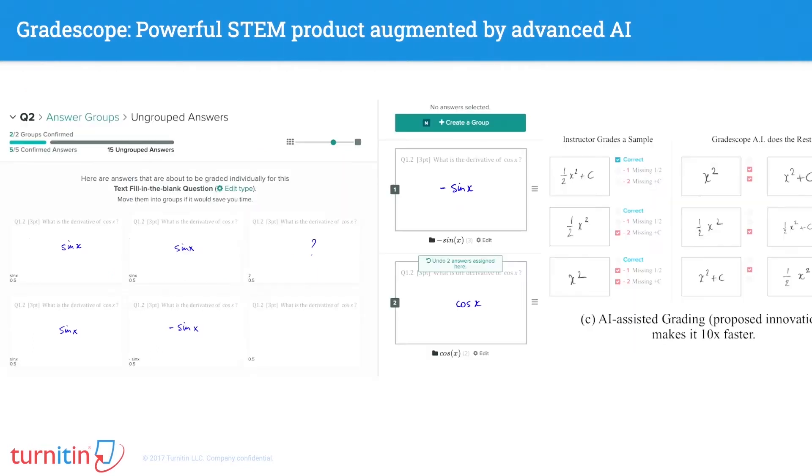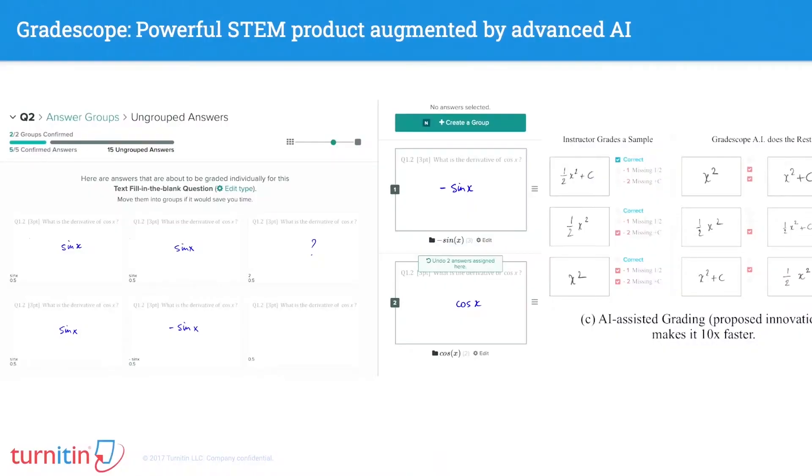There's interesting machine learning to do there. I came to Turnitin through an acquisition of a company I co-founded with Peter Abiel called Gradescope. Gradescope is on the STEM side — science, technology, engineering, math — not the writing side. Our North Star metric is how much time we save instructors without compromising assessment quality. That means helping instructors grade complex student answers — not just multiple choice — in the same way they would on paper, with detailed feedback and accurate grading, but at scale using digitization of paper-based workflows and machine learning on top of that, such as grouping similar answers together or automatically grading after watching an instructor grade.